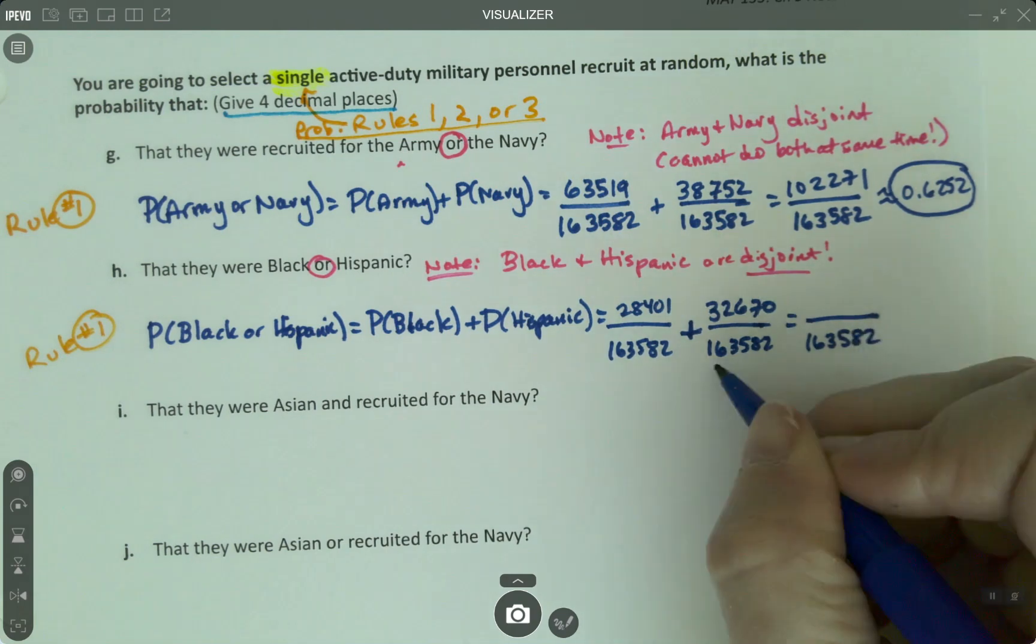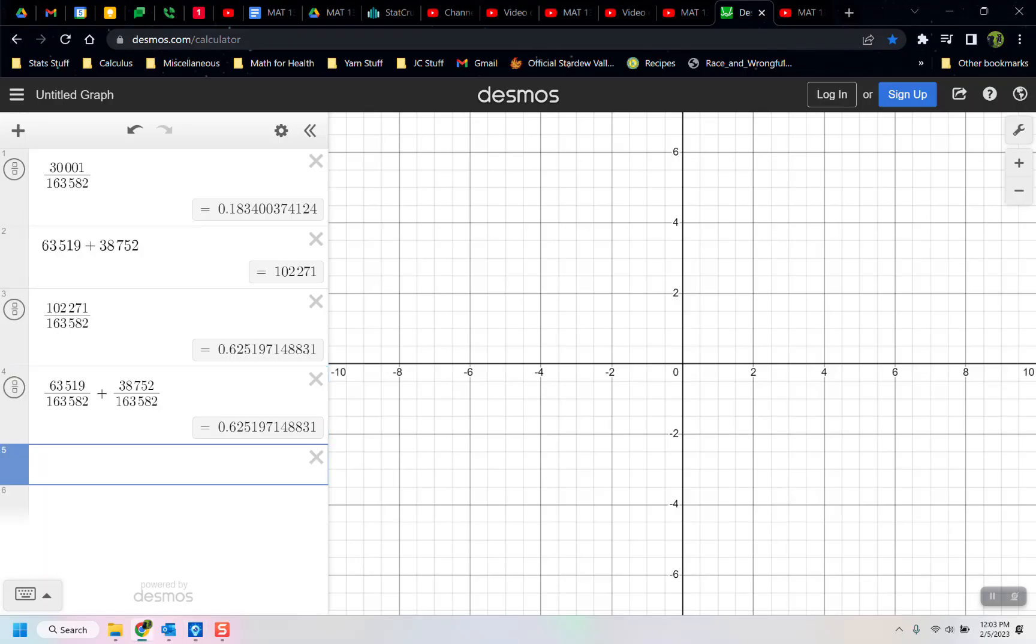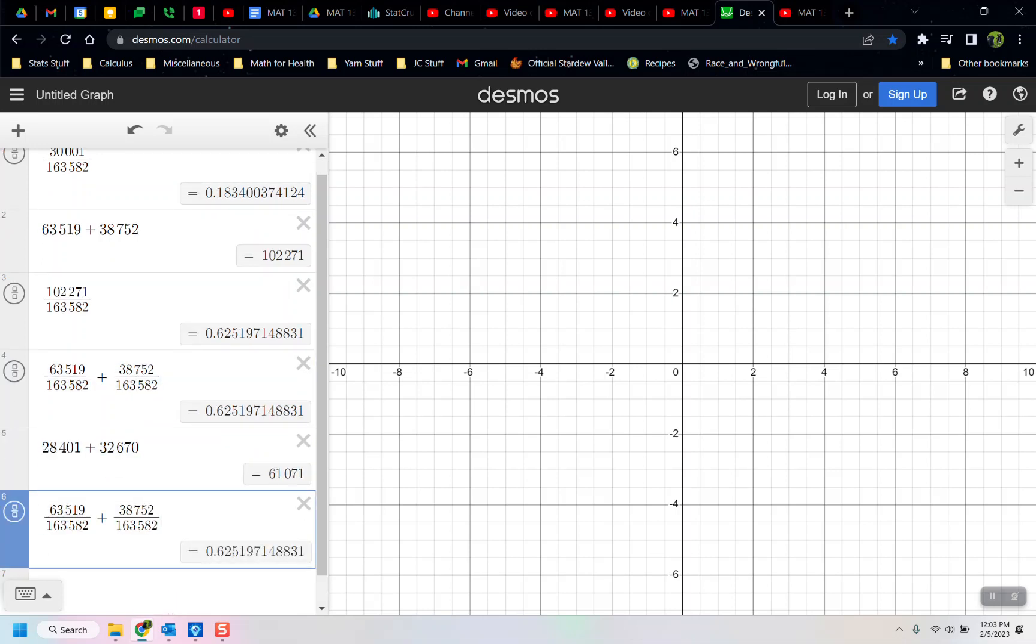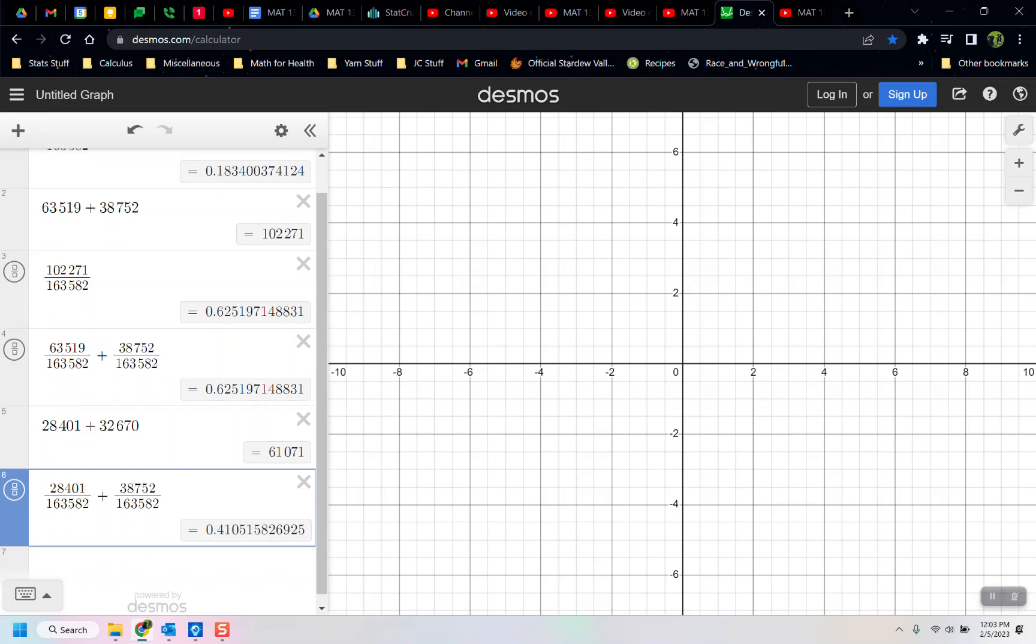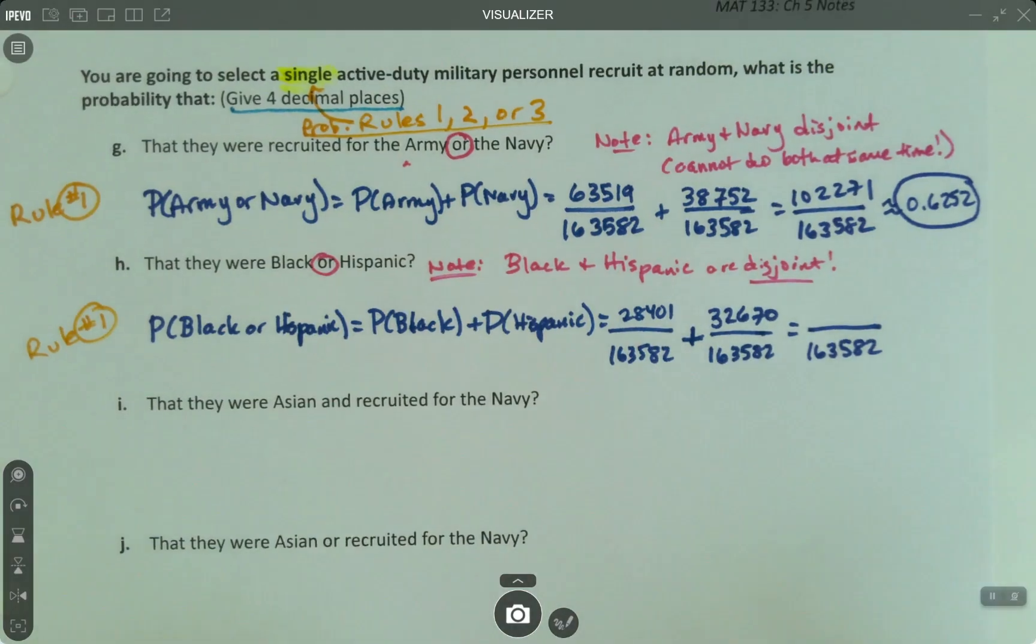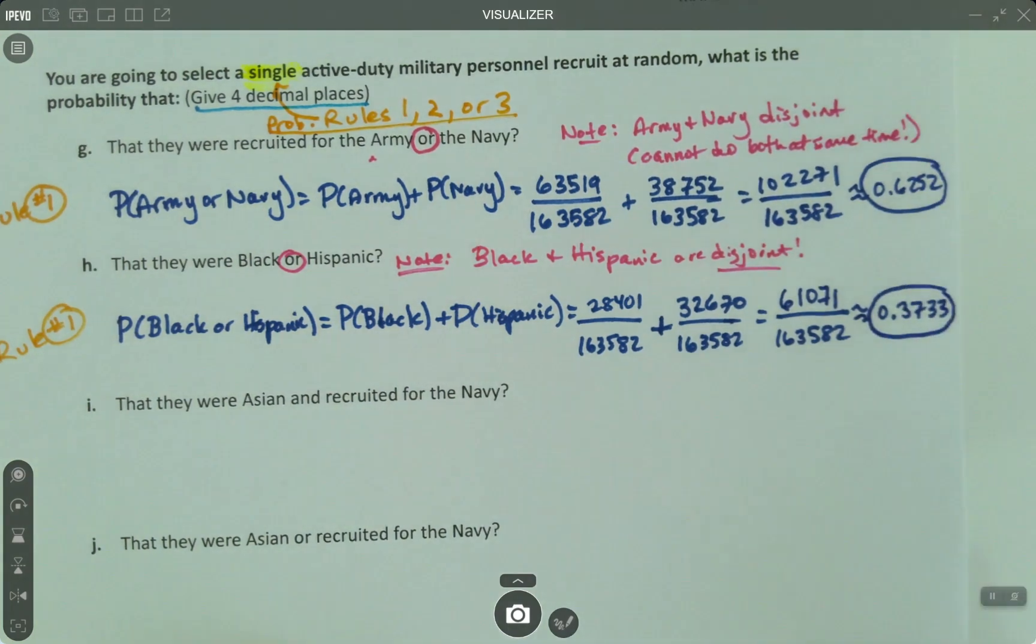You just add... leave the denominator alone and add the two numerators together. So we would take 28,401 plus 32,670 and that gets a 61,071 and again, you don't have to do that. You can do... here. Actually, let me do this. 28,401 plus 32,670 and you get that. 0.3733 which is what 61,071 divided by 163,582 would be. It's 0.3733. Again, it's not that the fraction was asked for. You're writing more notes than you need so that way you can answer any question that can get thrown your way. But that's the actual answer is the 0.3733.